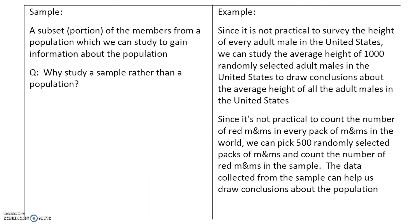A sample is a subset or a portion of the members from a population which we can study to gain information about the population. Since it's not practical to survey the height of every adult male in the United States, we can study the average height of just 1,000 randomly selected adult males to draw conclusions about all adult males. In the M&M example, we can pick 500 randomly selected packs and count the number of red M&Ms in the sample, then use that to make a conclusion about the population.